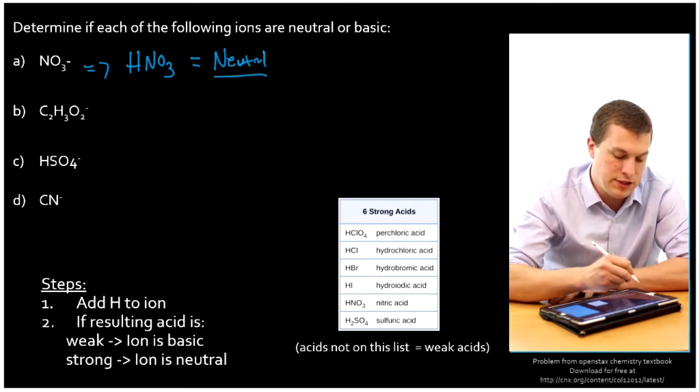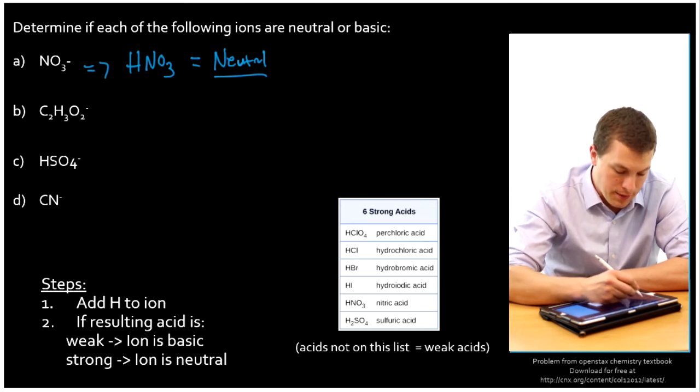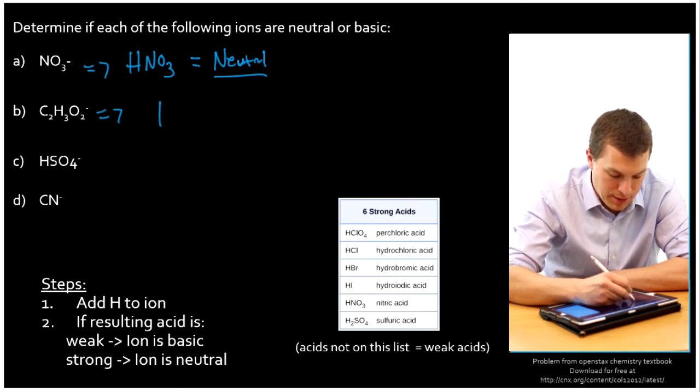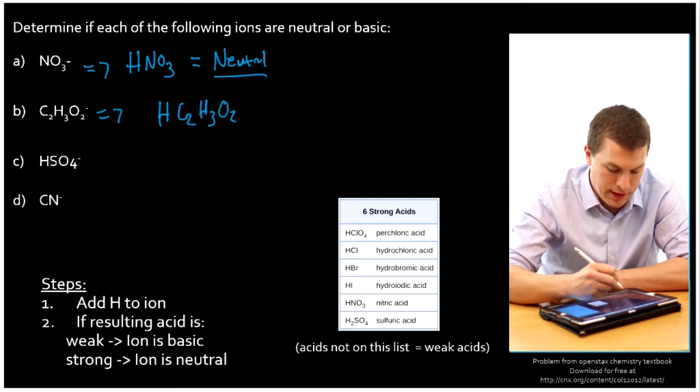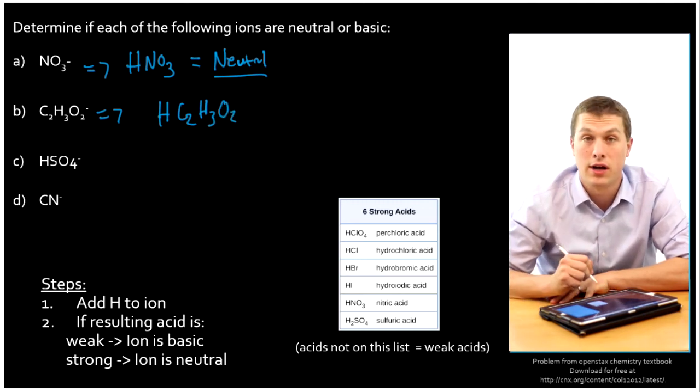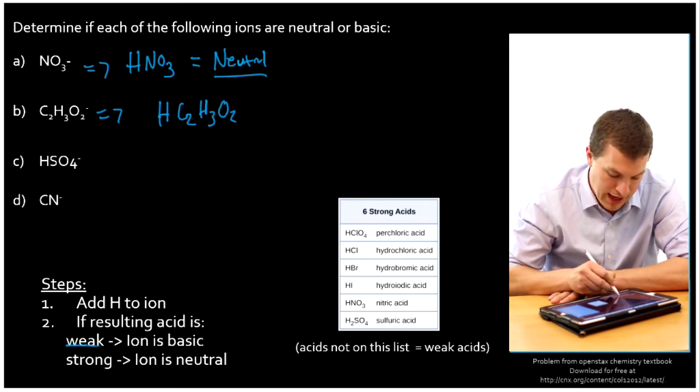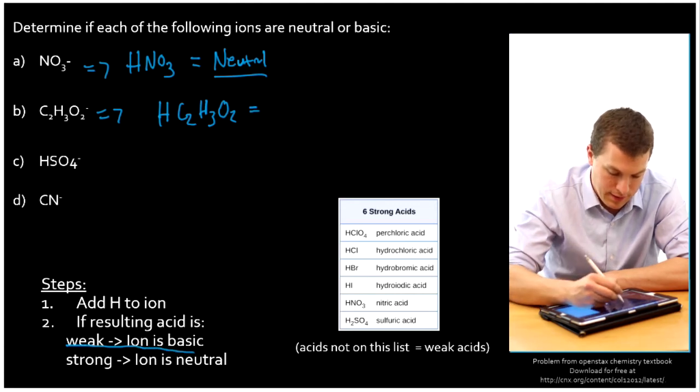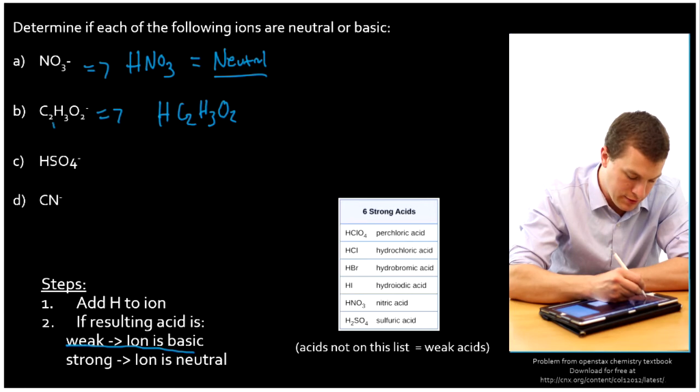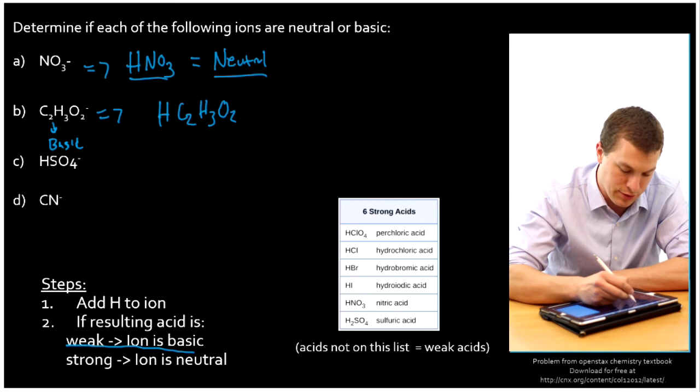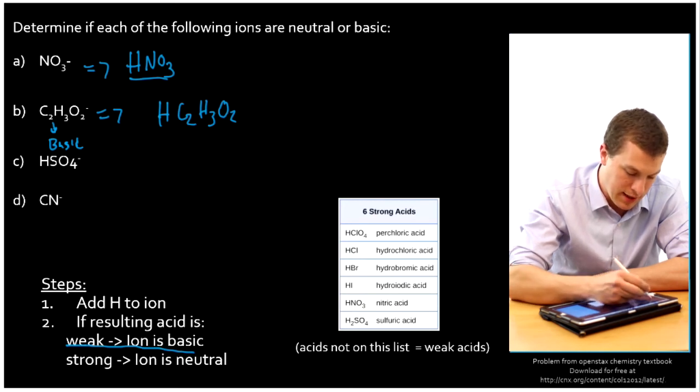Now let's take a look at C2H3O2, which is the acetate ion. If we add a hydrogen, that'll become HC2H3O2. And that is not on our strong acid list. And acetic acid is actually one of the most common weak acid examples. So since it's a weak acid, that means that this guy is basic. Of course, HNO3 is not neutral. HNO3 is acidic. So we'll put that right here.